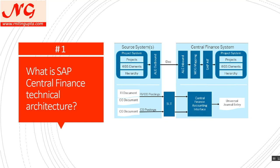Once master data is in place, transaction data — FI load and CO load — moves through SLT and gets posted to the Universal Journal, a table called ACDOCA, where FI and CO objects are merged. This is different from traditional ECC where FI and CO have separate tables. This flow is for real-time replication; for the initial load, the mechanism differs slightly — for example, FI documents move through RFC connection rather than SLT.